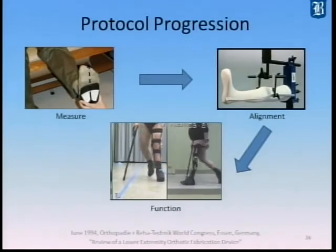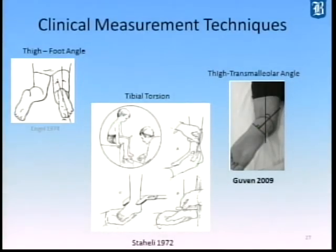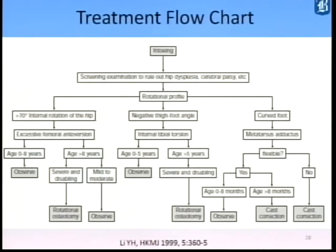Because in orthotics we're adding weight to the patient's limb through a wearable orthosis, we have to keep everything as light as possible — especially since we're always dealing with a neuromuscular deficit. In terms of clinical measurement techniques, there are several represented in the literature: the thigh-foot angle, the thigh transmallolar angle, and tibial torsion measured in a seated position. We're all driven in some regards by certain treatment algorithms, especially in pediatric situations — looking at in-toeing, screening for hip dysplasia, cerebral palsy, and then following the algorithm for treatment including UCBLs, twister cables, and heel seats.